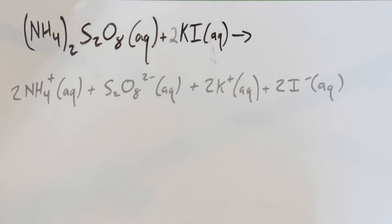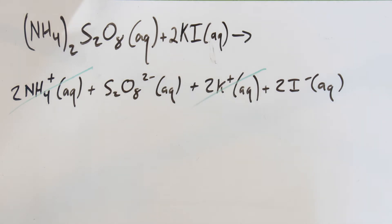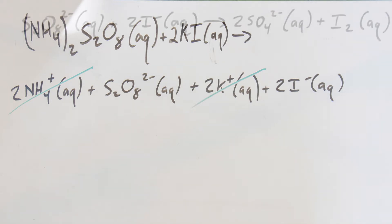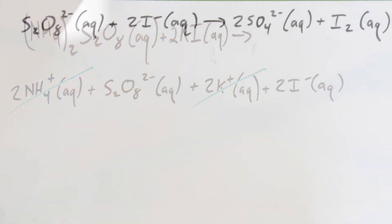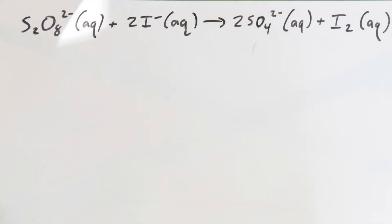Before we get too far into this, those are completely ionized in water, so we have the ammonium cation, the persulfate anion, potassium cation, and iodide anion. As far as the cations, they are spectators, so we really don't care about them. We're going to write this as the anions doing most of the work and occasionally producing neutral compounds.